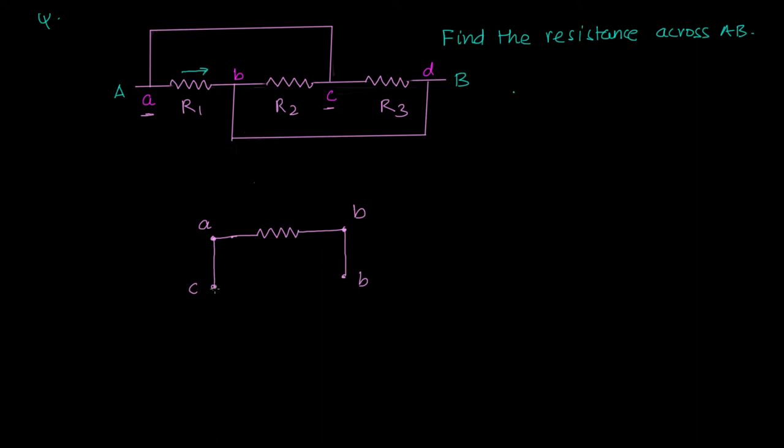This point is c, so R3 is connected between c and d. D is connected with b through a short, through a zero resistance wire. So this is d, and between c and d I have my R3 connected. This was R1, this is R2.